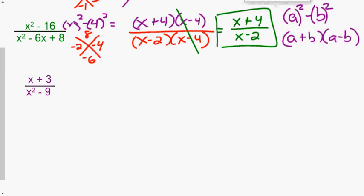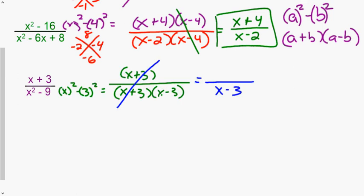Pause and try the next one on your own. On the bottom, the difference of squares x squared minus 9 becomes (x + 3)(x − 3). On top, it was already factored as just (x + 3). The (x + 3) cancels, and we have (x − 3) in the denominator. Those canceled terms become 1 over 1, so our final answer is 1 over (x − 3).